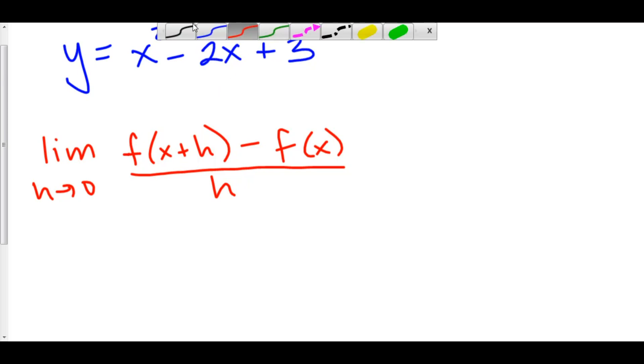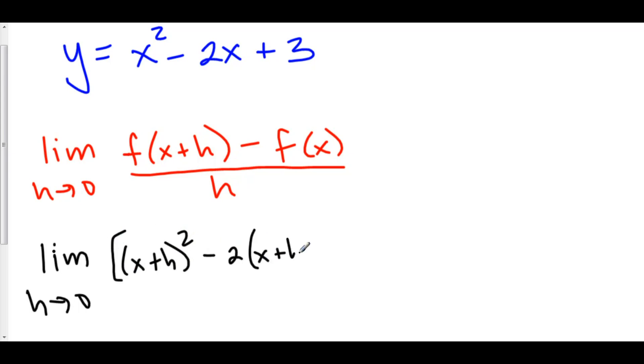Here we have the limit as h approaches 0. We're going to plug x plus h, this stuff, into our function. What it tells us to do is take our stuff, x plus h, square it, subtract 2 times our stuff, x plus h, and then add 3.